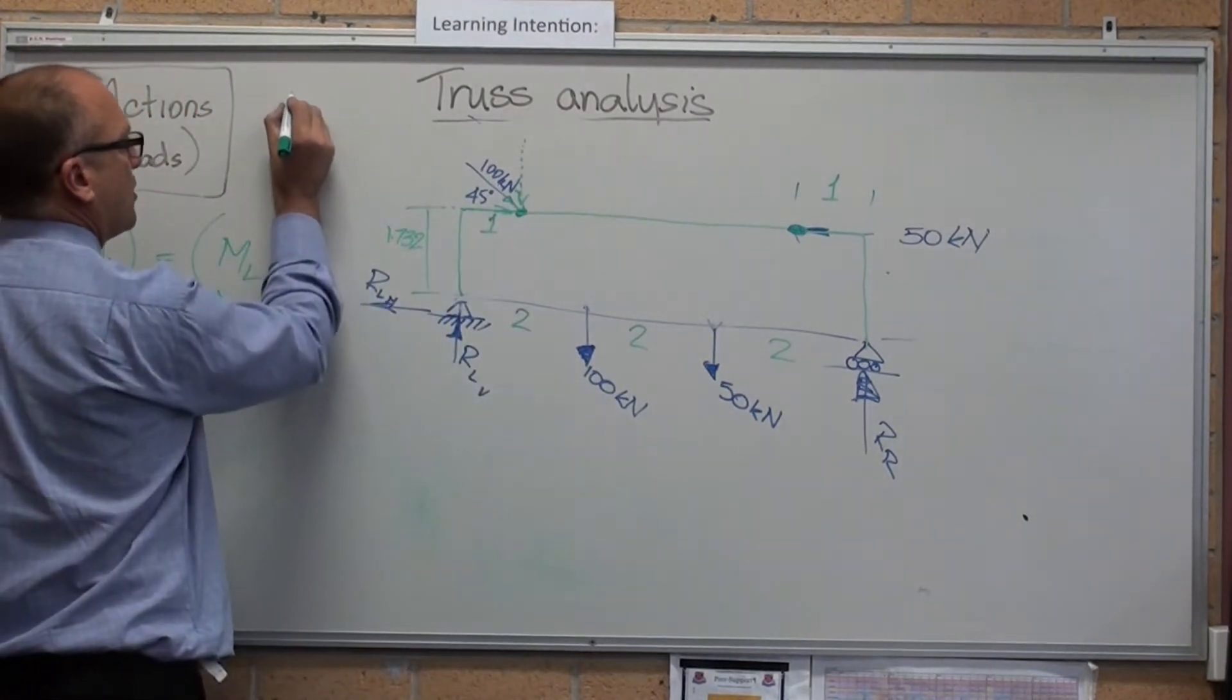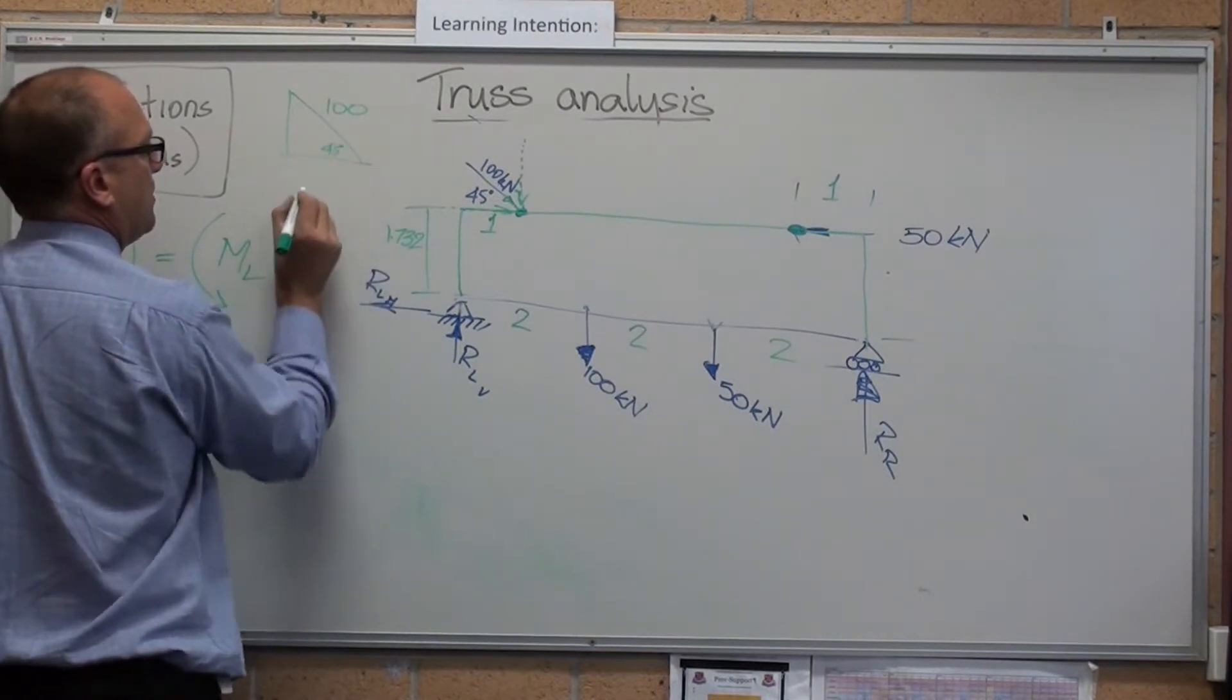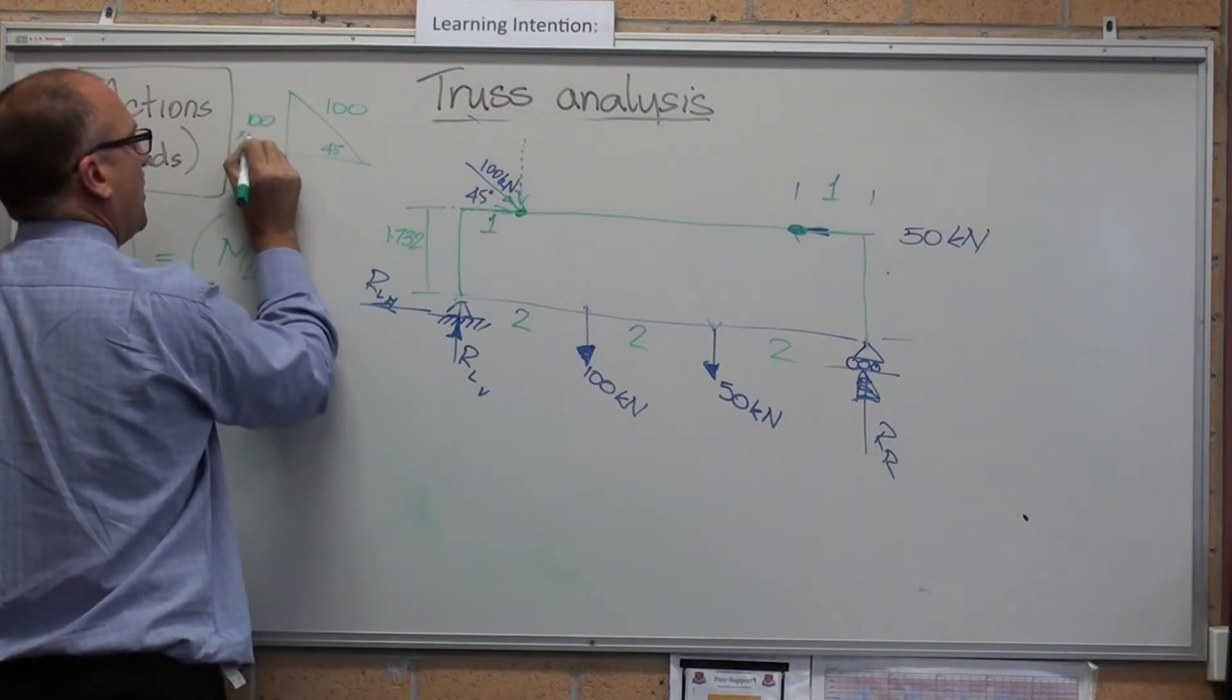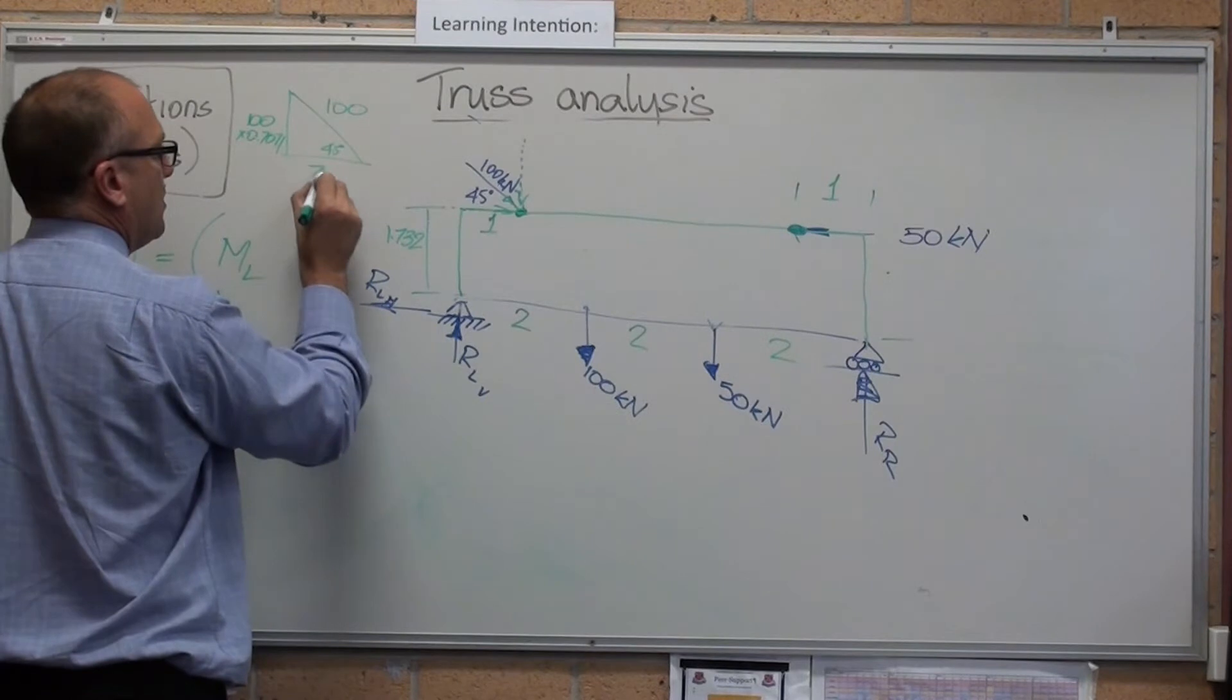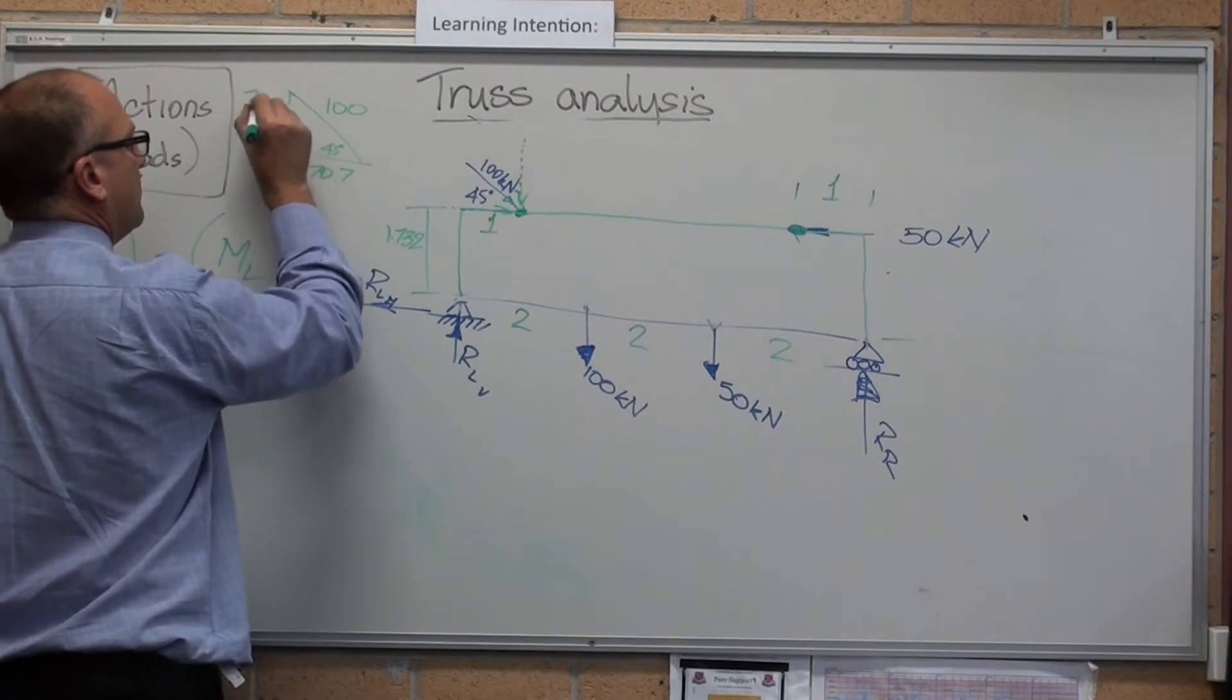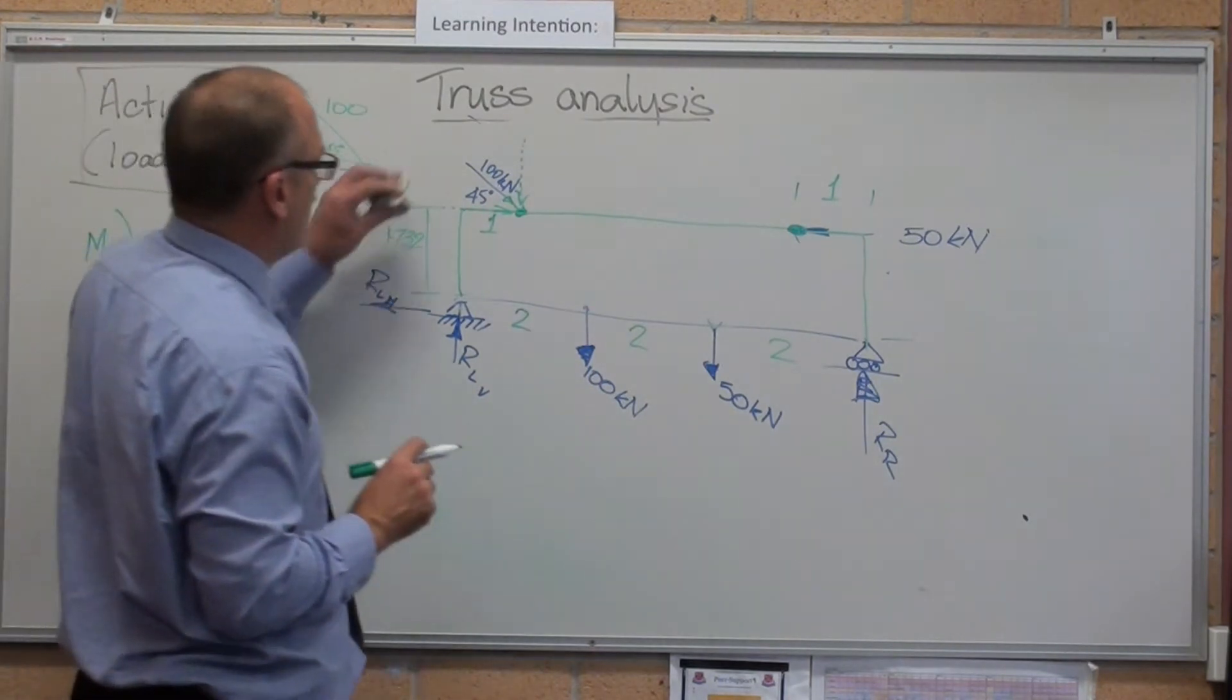First thing, I'm going to get that 100 kilonewtons. I'm going to turn that into a force down and a force across. What we call resolving it into components. 100, 45 degrees, that and there's 100 sine 45. That's 100 times sine 45 is 0.7071. Please back me on that. So that's 70.7. They are both exactly the same. Sine 45 equals cos 45. So I've just resolved this into components.